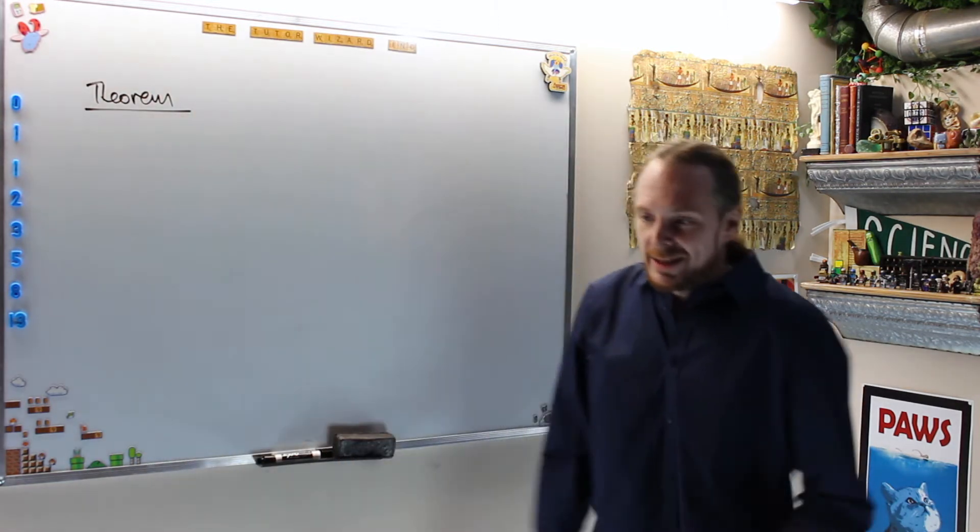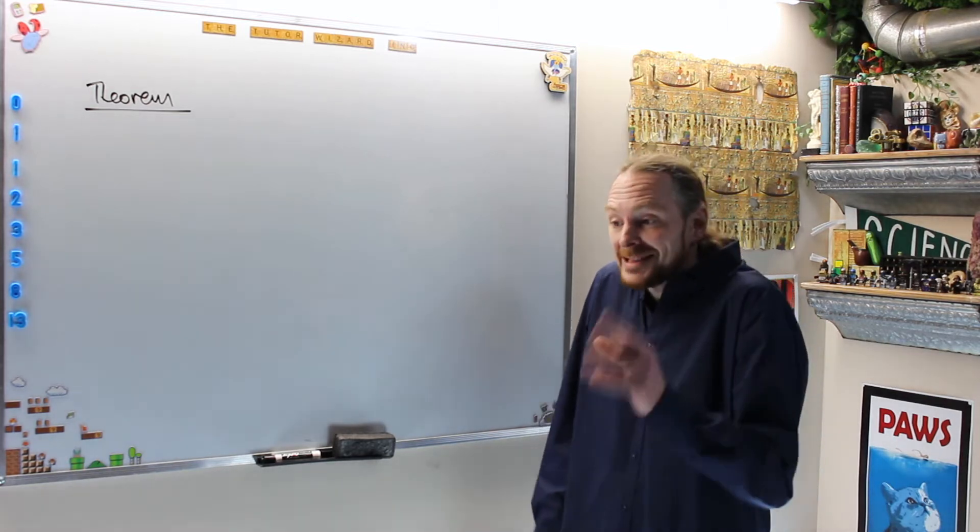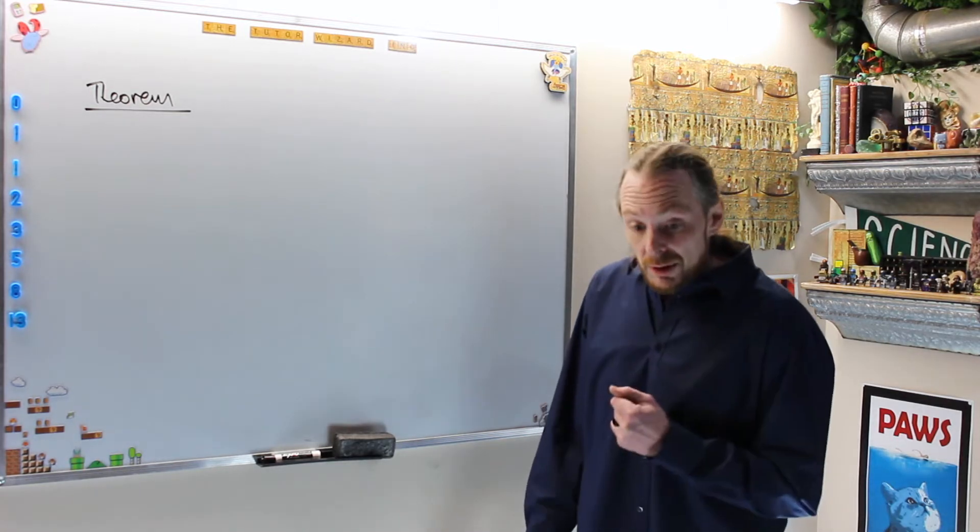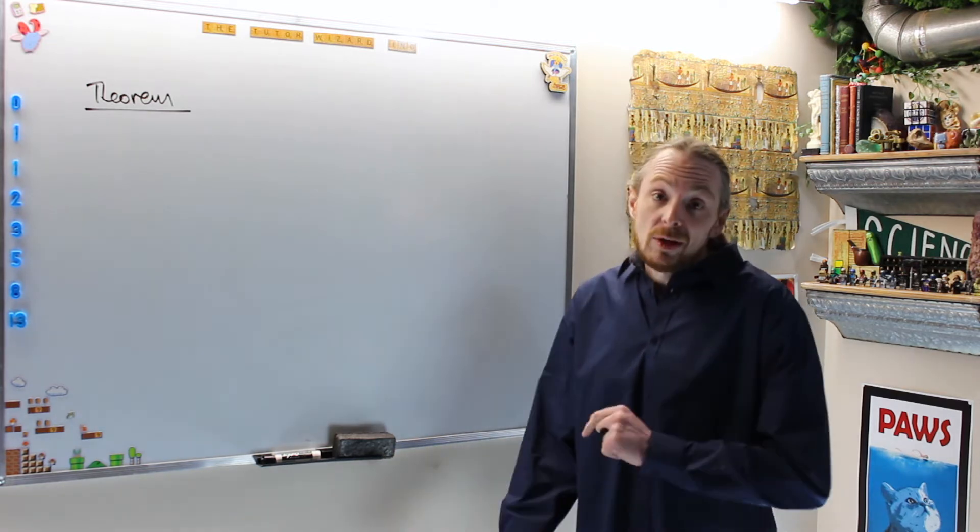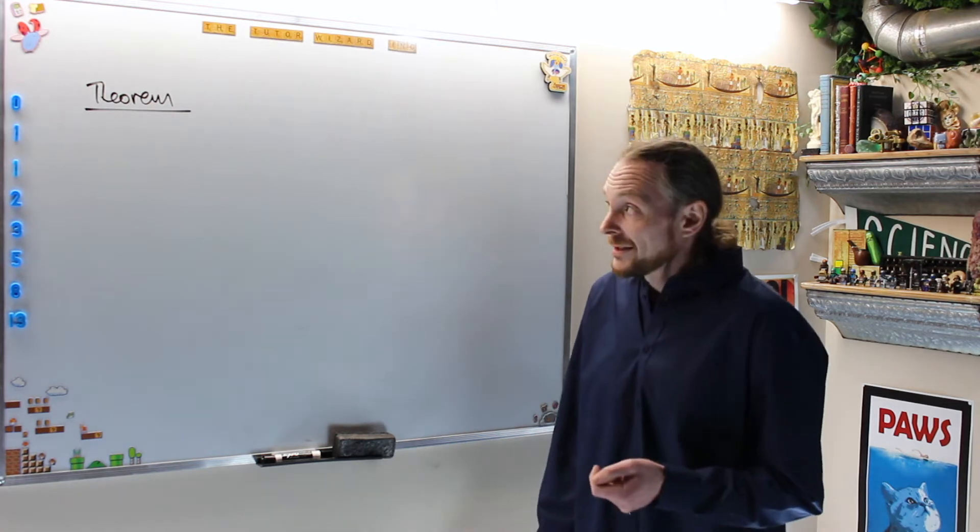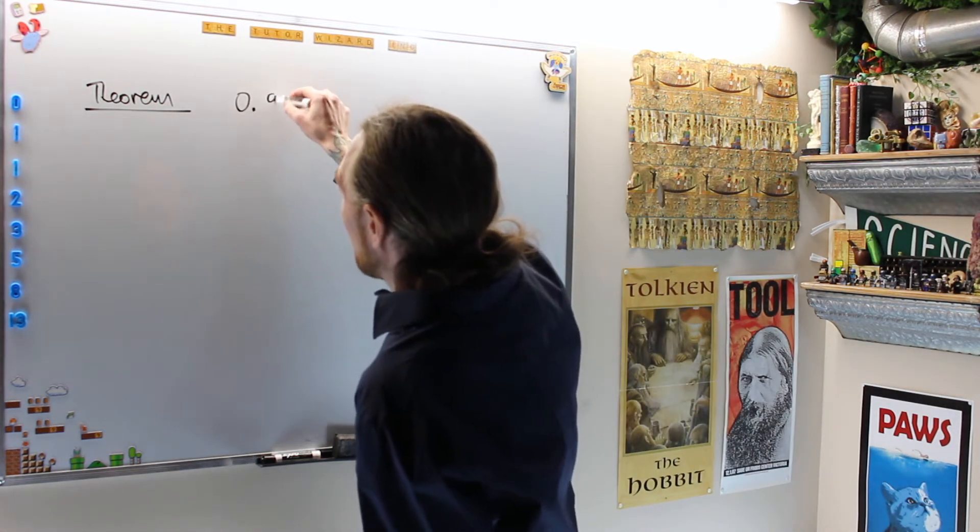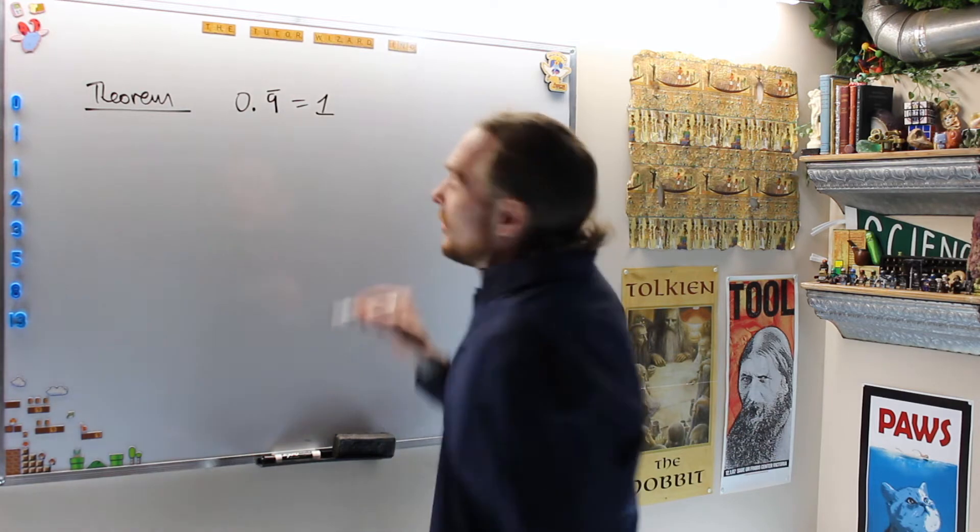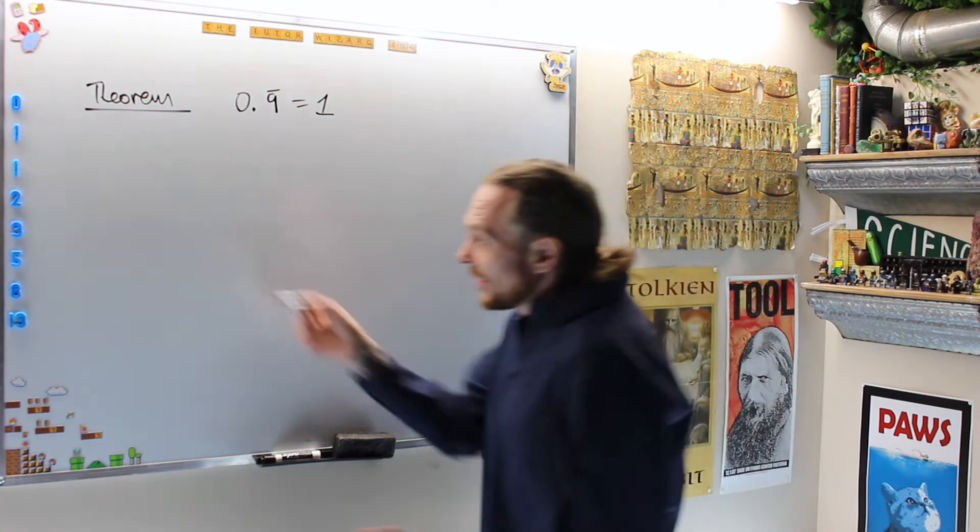Theorem, or proposition as they call it. I'm going to have a statement that I think is true, and I'm not going to guess or argue this willy-nilly. We're going to give a deductive argument as to why it actually is true. What's our theorem? I claim option two is correct: 0.9 repeating is equal to 1. How do I do that? Proof.